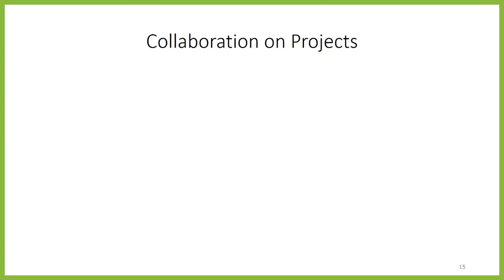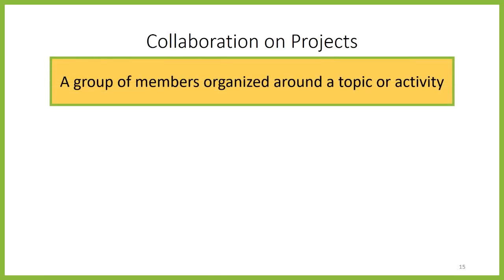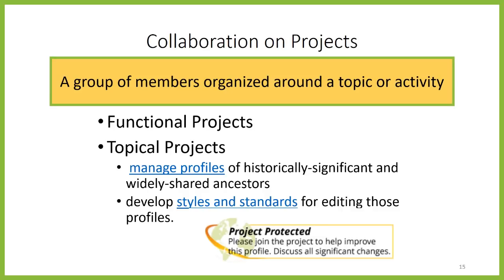Finally, I want to talk about projects. A project is simply a group of members organized around a topic or activity on WikiTree. Projects make it easier for members interested in the same profiles or volunteer work to find each other, communicate, and coordinate their efforts. There are two types of projects. Functional projects are centered around WikiTree activities — for example, I'm a member of a WikiTree presenters project where we share presentations and give each other ideas. There are also projects around sourcing unsourced profiles, correcting data errors, and numerous other functions. Topical projects are centered around a group of profiles connected in a geographical or historical way, similar to closely related profiles but on a much larger scale.